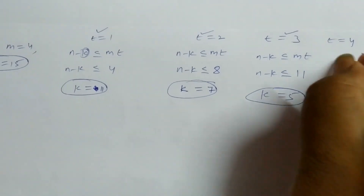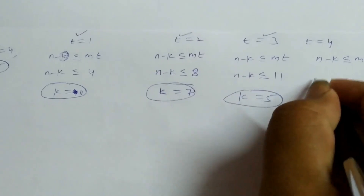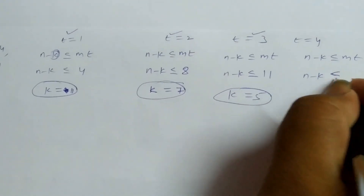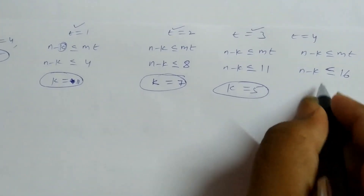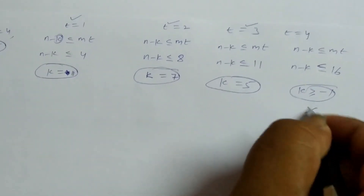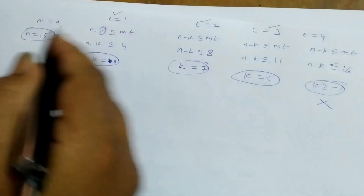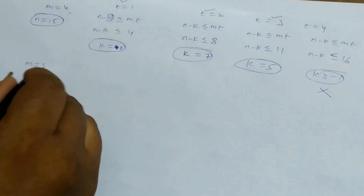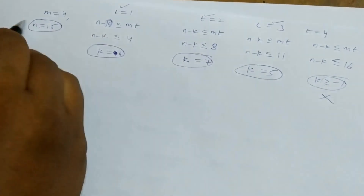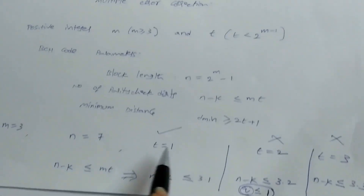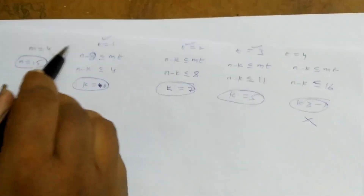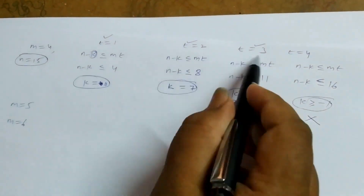For t equal to 4, n minus k must be less than or equal to m times t, which is less than or equal to 16. Since n is 15, 15 minus k would need to be greater than or equal to 16, which is not possible — the same situation as for m equal to 3. For m equal to 4, t equal to 1, 2, and 3 are preferable. We can extend this analysis to m equal to 5, m equal to 6, and so on.